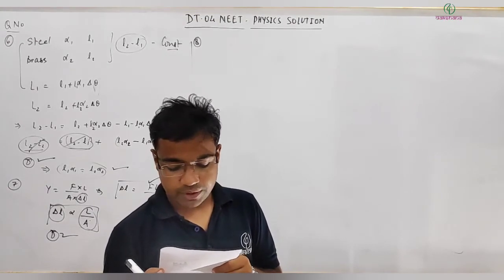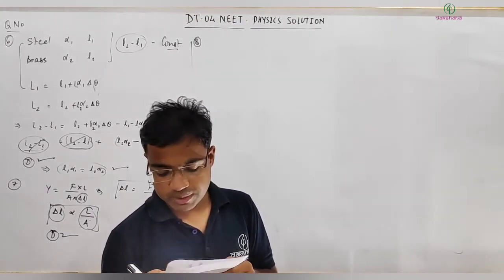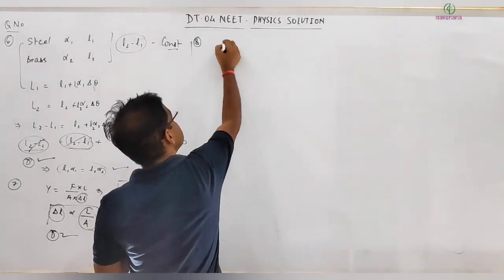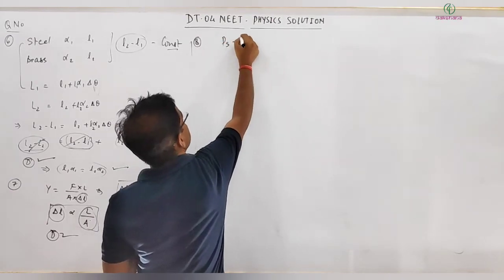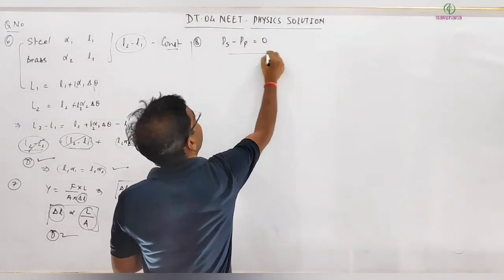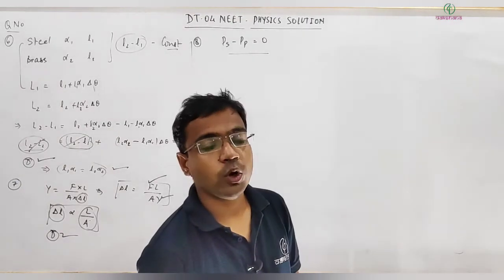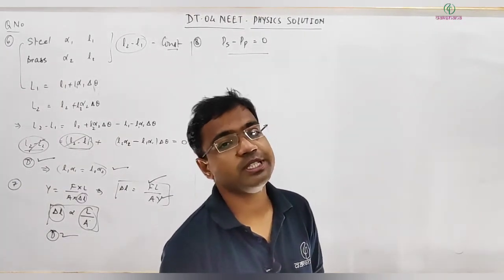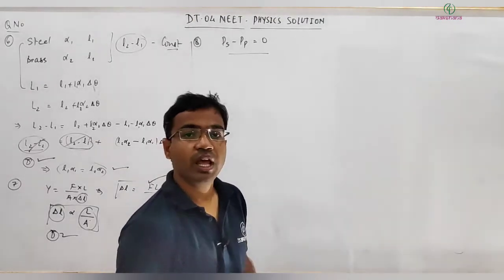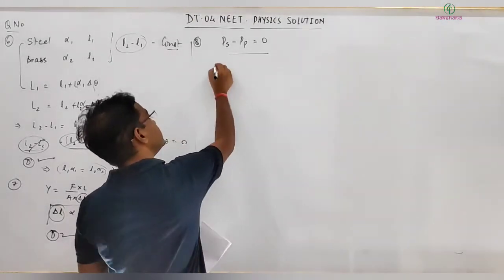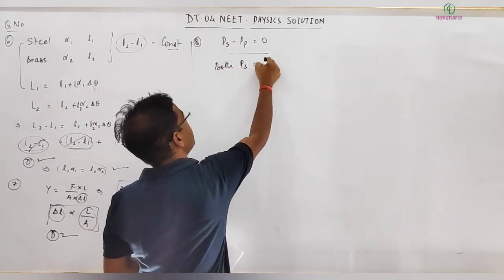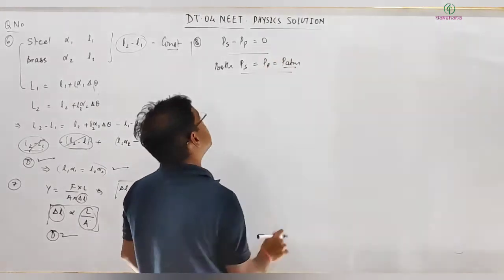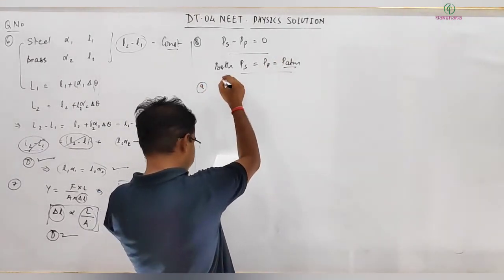Question 8: A siphon is used in a demonstration. The pressure difference between points P and S will be zero, as both points are open to the atmosphere — they lie on the surface of the liquid — so P_S = P_P = P_atm and the difference is zero. The answer matches option C.